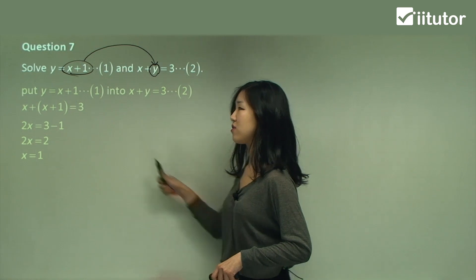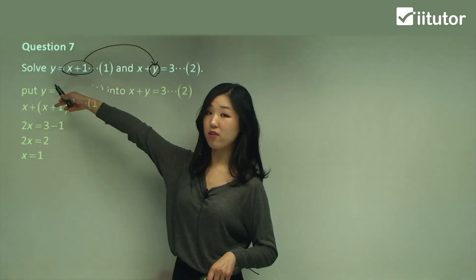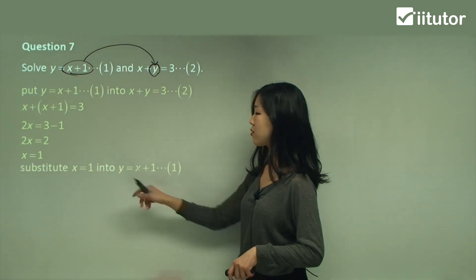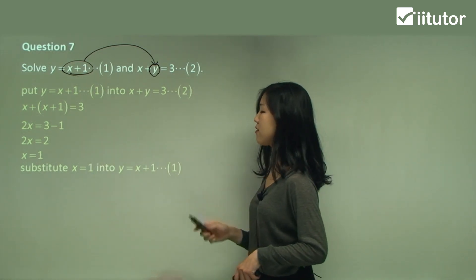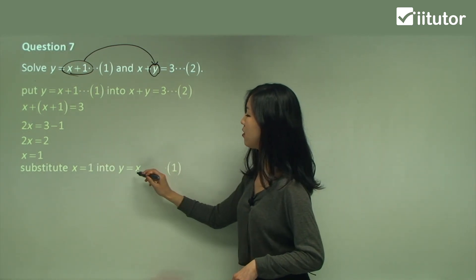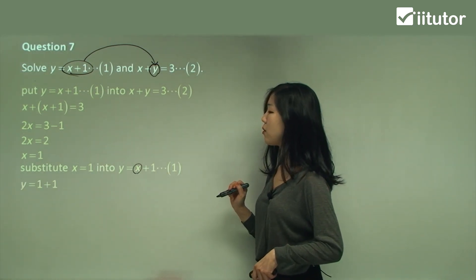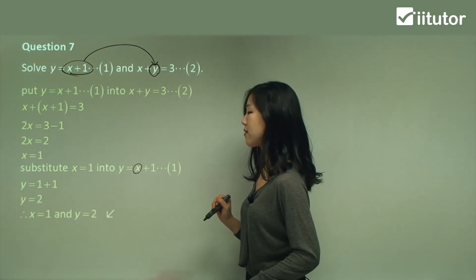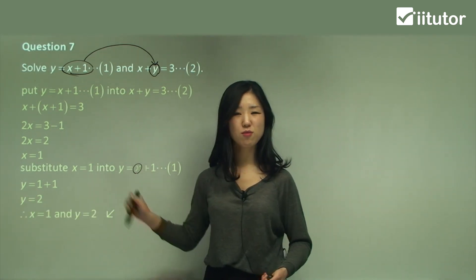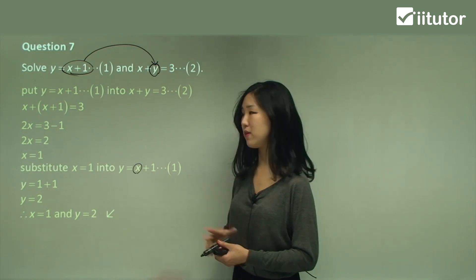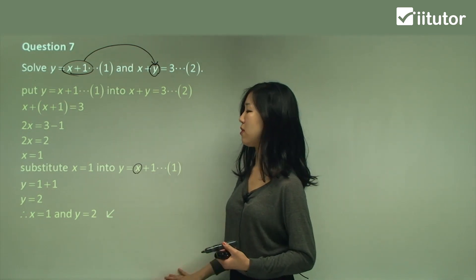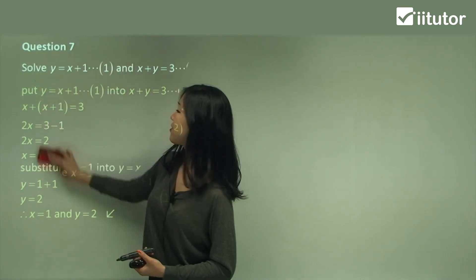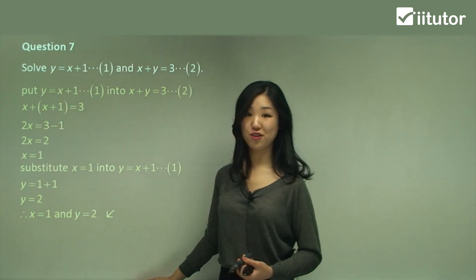Now let's find y. I'll substitute into the first equation because y is already the subject. So substitute x equals one into the first equation — one plus one is two. Therefore x equals one and y equals two. The rest is just as simple as what we did in the equation method. That is the substitution method.